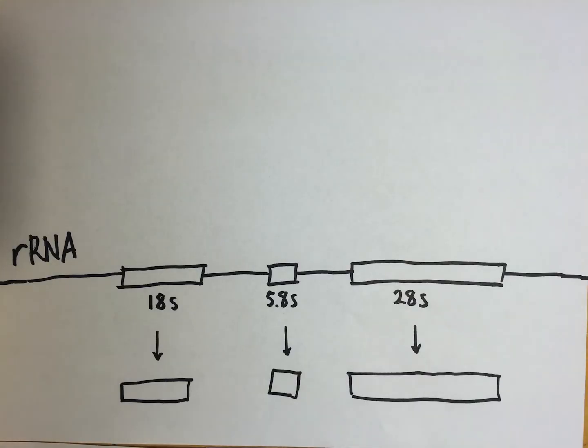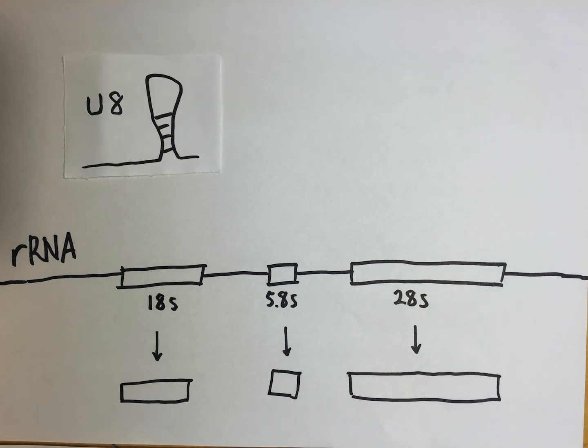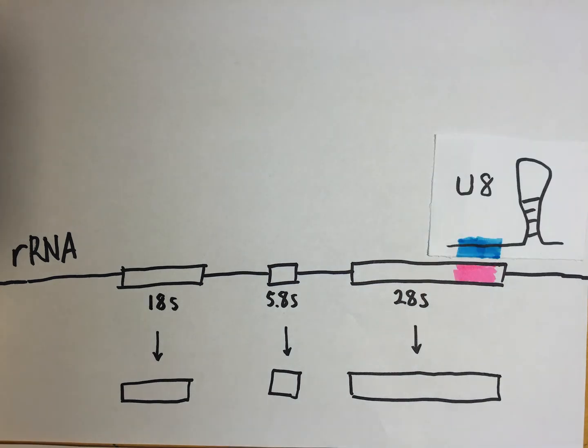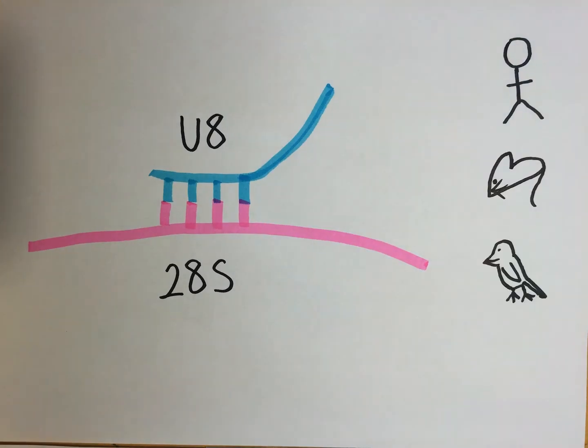For example, the U8 snoRNA is known to be required for ribosomal RNA processing, but the target site is unknown. With PARIS, we were able to determine the 20 base pairs in this interaction. We also found that this is conserved in evolution.